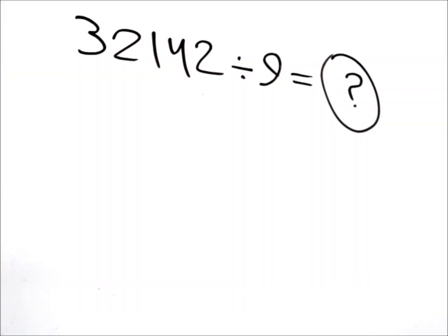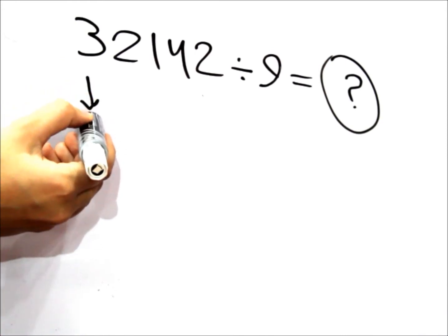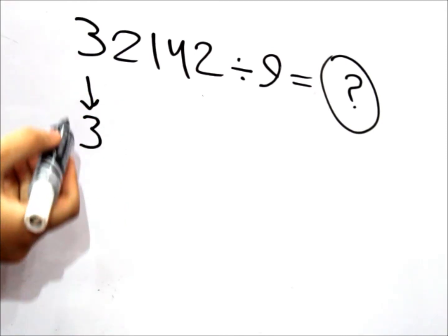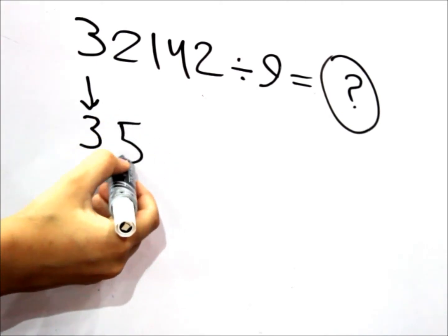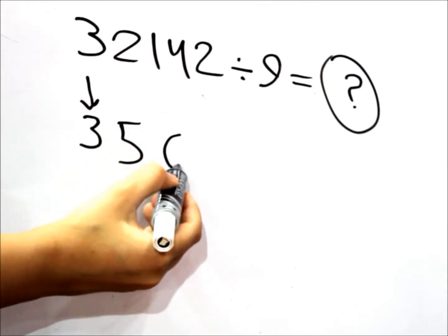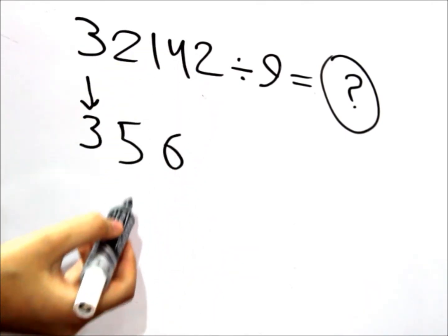And here we have a bigger example. And we're just going to do the same method again. We're going to put down the 3. Add it with the second digit in the number. And that's the 2. And they are 5. And we're going to do the same thing with the 5 and the 1. 5 and 1 is 6. 6 and 4 is 10.